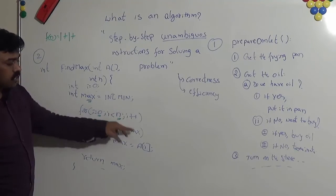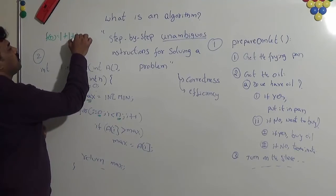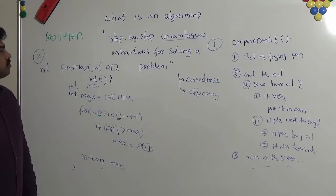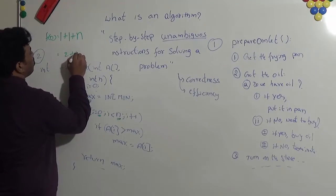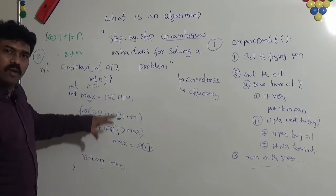So since we are iterating through all the elements of the given array, assume that we are taking some n times. Same thing can be represented as 2 plus n.